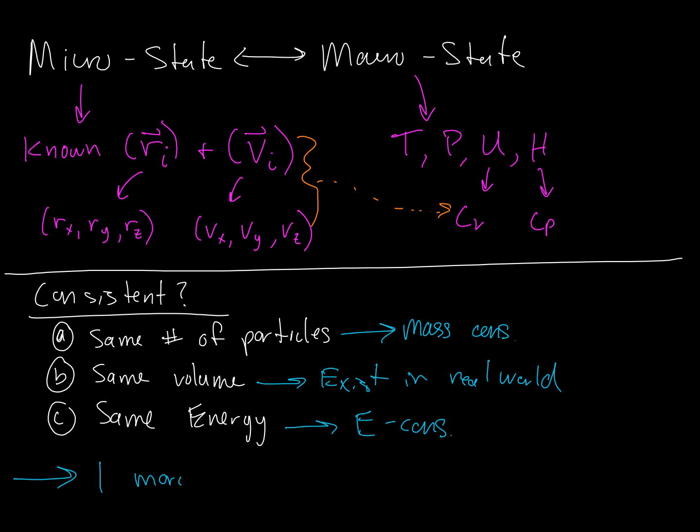One macrostate has many microstates. You can imagine that if I had a jar of air, or just the air in this room, on average the properties of this room are not changing if the HVAC is working well. Temperature's going to stay the same, pressure's going to stay the same. Once we define those two properties, then everything else is locked—internal energy, enthalpy, Gibbs free energy of the air.